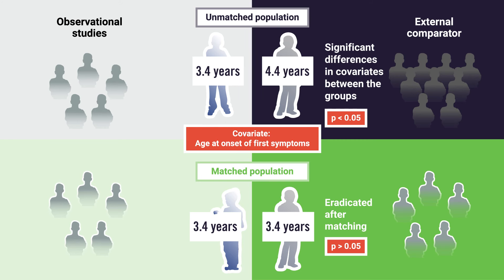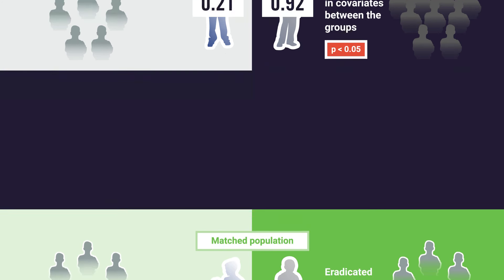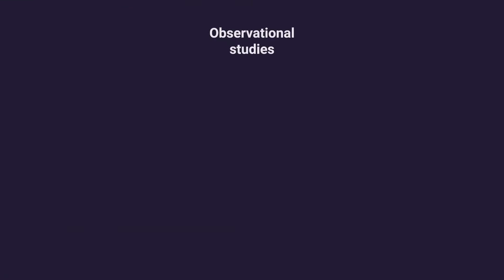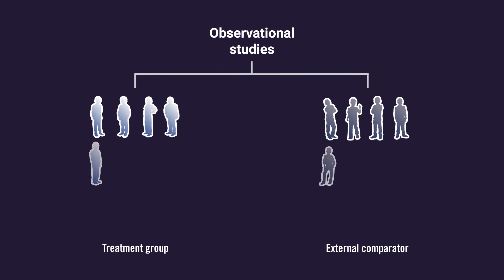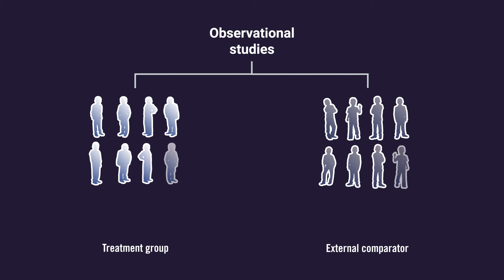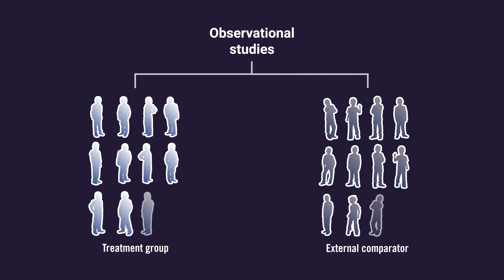To summarize, in observational studies such as those for rare diseases, propensity score matching is used to mimic the randomization process of RCTs, enabling treatment effectiveness to be assessed.